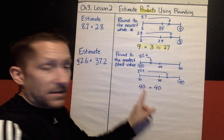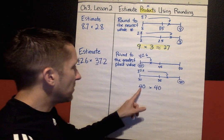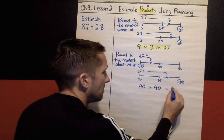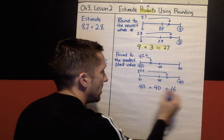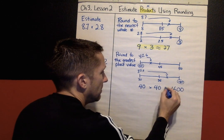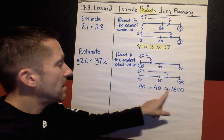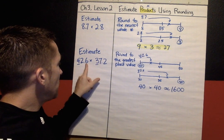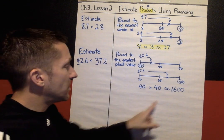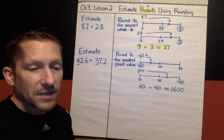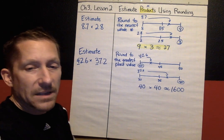Now this is something I can handle using mental math. Four times four is 16, and I need to add two zeros. So our estimate for 42.6 times 37.2 is going to be about 1,600.